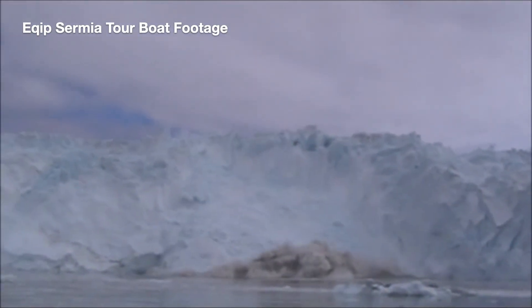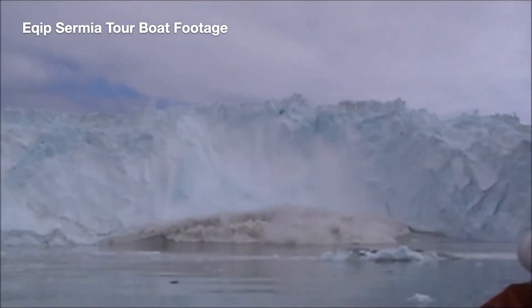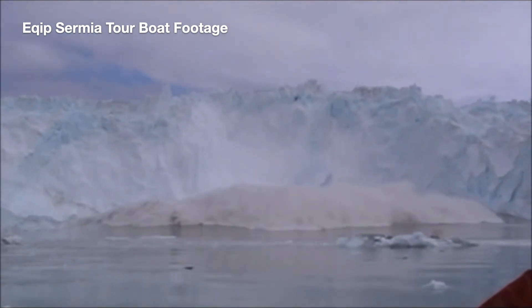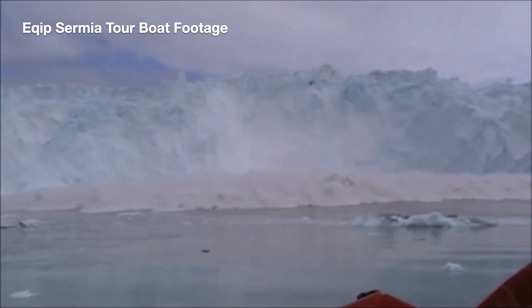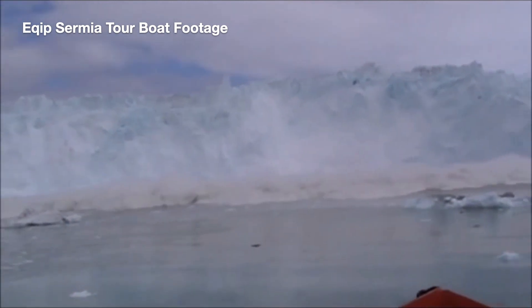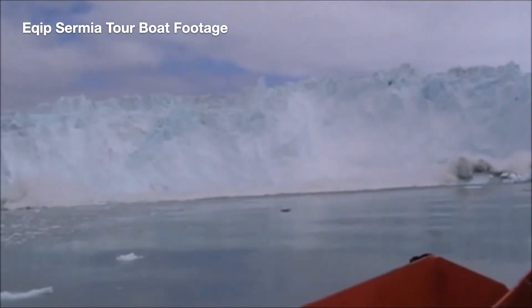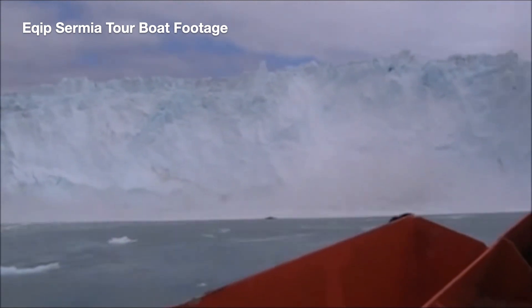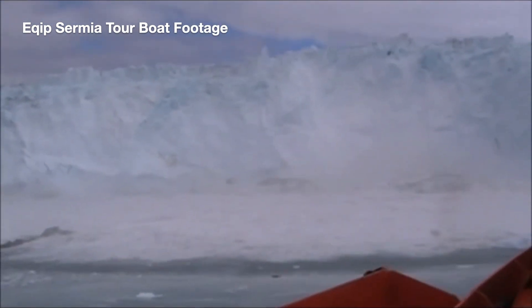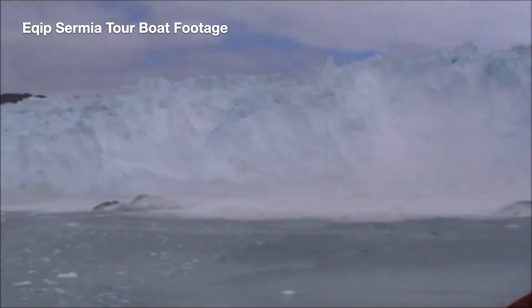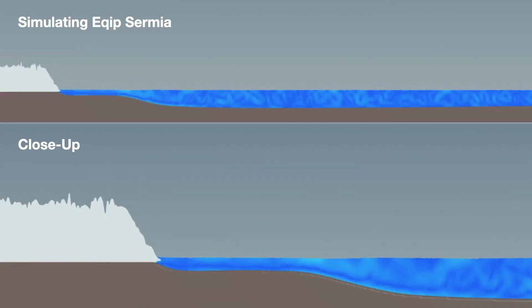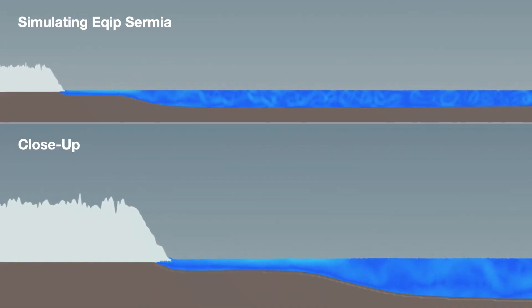For our final validation method, we reproduce various characteristics of a real-world calving event measured at Ekib Sermia, an ocean-terminating glacier in Greenland. On the morning of July 2, 2014, a tour boat near Ekib Sermia watched as over 800,000 metric tons of ice collapsed into the water just 800 meters away. Thankfully, no one was harmed, and simultaneously, a team of researchers on the opposite shore were recording measurements for this event using a terrestrial radar interferometer and tide gauge. We use our model to reproduce this calving event and compare key results against the real-world measurements.